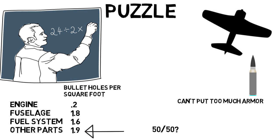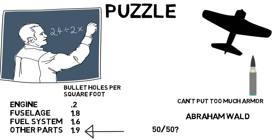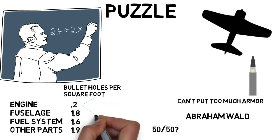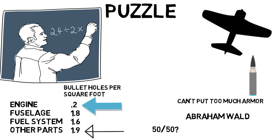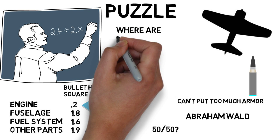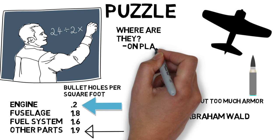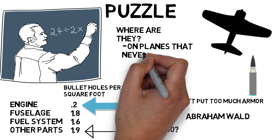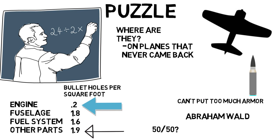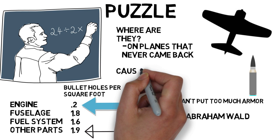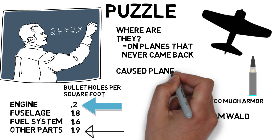During World War II, officers came to a mathematician named Abraham Wald with this exact question. His answer was not what they expected — he said to put armor over the engine. He said to put armor over the place where the bullet holes aren't, because where are those bullets? They're on the planes that never came back.